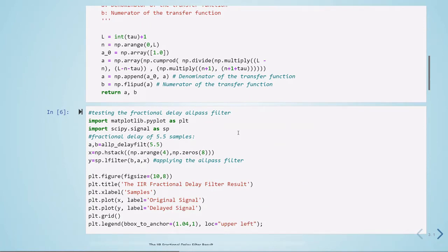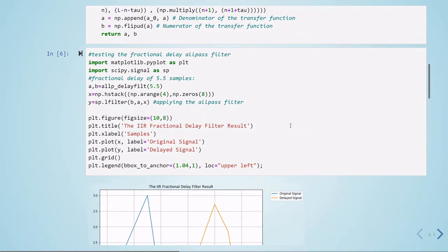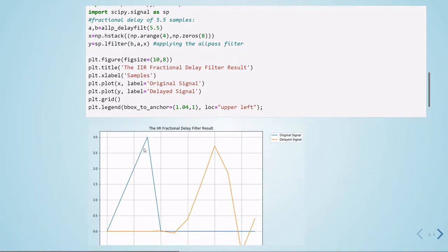a denominator and a numerator. Then we can use the scipy signal L filter, and we will filter our test signal. We give the denominator and the numerator. Here we have our test signal, and then the output of the filter,